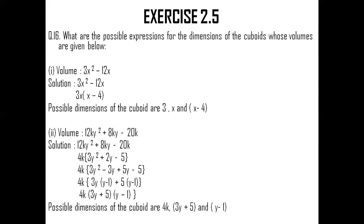With this, we come to the end of exercise 2.5 as well as to the end of chapter 2, Polynomials. Make sure you practice well, especially exercise 2.5, which has the application of all the different types of algebraic identities. This is all for now — take care of yourself. Until we meet next time with another session and another chapter, till then, take care, bye.